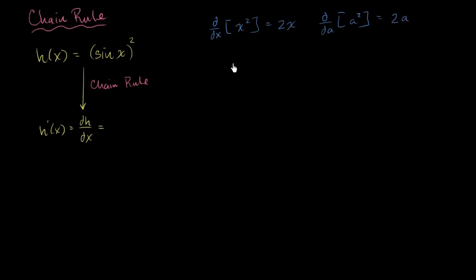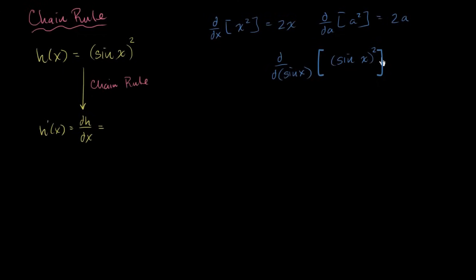Now I'll do something that might be a little more bizarre. What if I were to take the derivative with respect to sine of x of sine of x squared? Wherever I had the x's or the a's, I just replaced it with sine of x. So this is just going to be 2 times whatever I'm taking the derivative with respect to — here it's sine of x — so it's going to be 2 times sine of x.